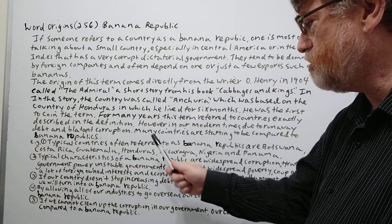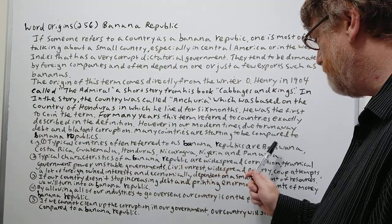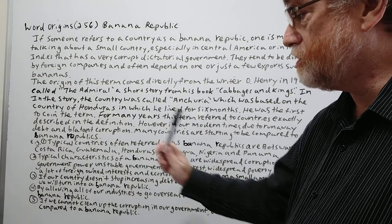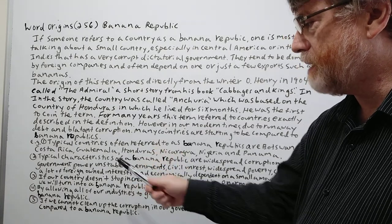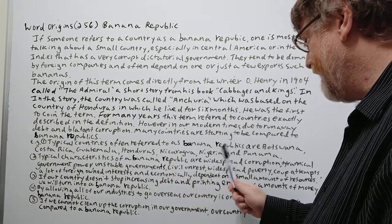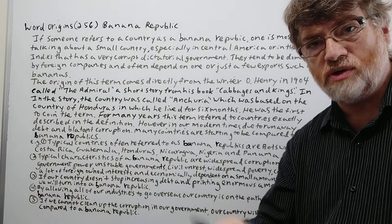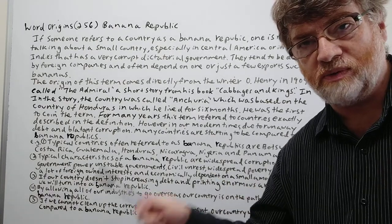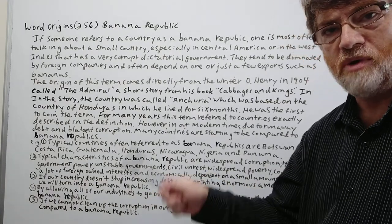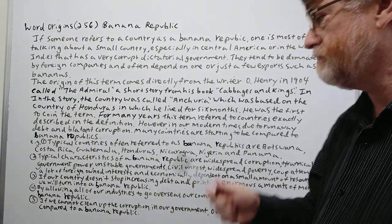Typical countries often referred to as banana republics are Botswana, Costa Rica, Guatemala, Honduras, Nicaragua, Nigeria, and Panama — or at least traditionally these were the countries that were usually most likely to be referred to as banana republics.